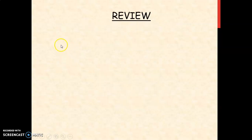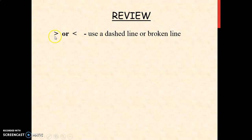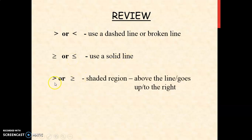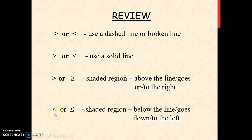We will have a short review. If we're using greater than or less than, you're going to use a dashed line or a broken line. If you're using greater than or equal to, or less than or equal to, you're going to draw a solid line. Now, if the inequality is greater than or greater than or equal to, the shaded region will be above the line or it goes up or to the right of the line. If the inequality symbols are less than or less than or equal to, the shaded region will be below the line or it goes down or to the left of the line.